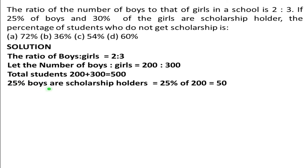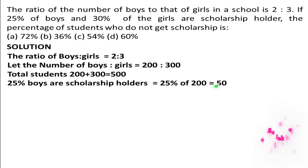25% of boys are scholarship holders, as given in the question. We have 200 boys total. So 25% of 200 boys = 50. So 50 boys are scholarship holders.